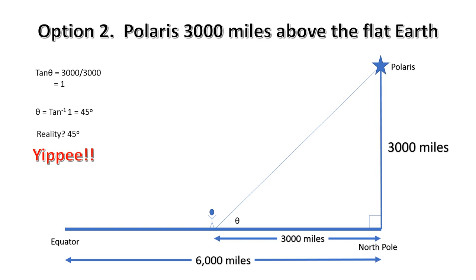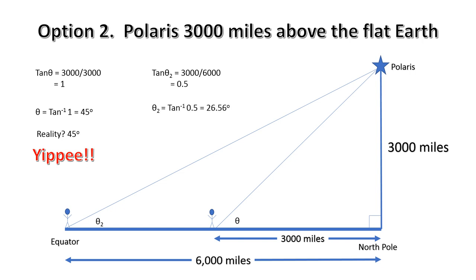We've got two points that match here. At the North Pole, Polaris is directly above our heads — we know this on the globe Earth, and this is also what the flat Earth says. And the flat Earth predicts that at 3,000 miles south of the North Pole, Polaris will be elevated by 45 degrees. Yes, we have a match. But there is a problem. We now take our guy all the way to the equator, giving us another right-angled triangle. We'll call this angle theta 2. From the formula, the tangent of theta 2 is 3,000 divided by 6,000, which is 0.5. Theta 2 equals the inverse tangent of 0.5, which is 26.56 degrees.